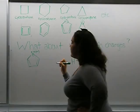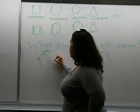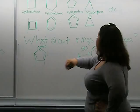What about rings with charges? Anion, such as this one, satisfies the rule of having lone pairs as well as pi bonds on all the carbons.